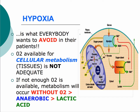Hypoxia is something we want to avoid in all patients because it means cellular metabolism cannot take place aerobically. We need oxygen for cellular metabolism to create ATP from glucose and drive metabolic processes. Without oxygen, we go into anaerobic metabolism, which is very inefficient, doesn't yield much ATP, leads to production of lactic acid, and most importantly is not sustainable.